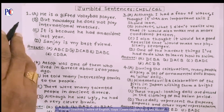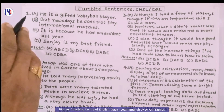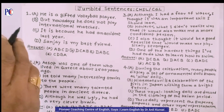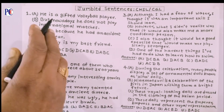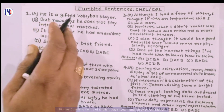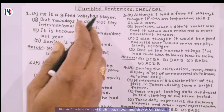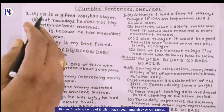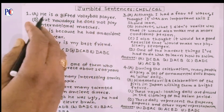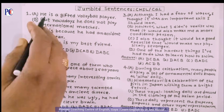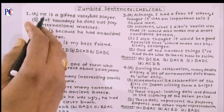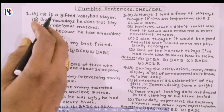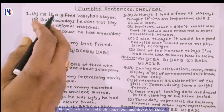Question number one. Sentence A: 'He is a gifted volleyball player.' Notice that 'He' is a pronoun, so this sentence is referring to someone already introduced — it cannot be the first sentence.